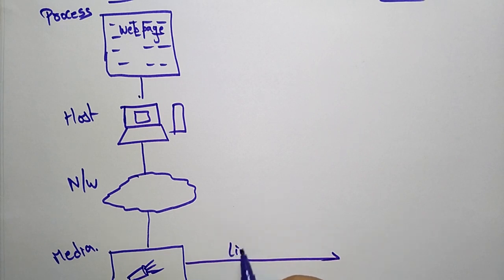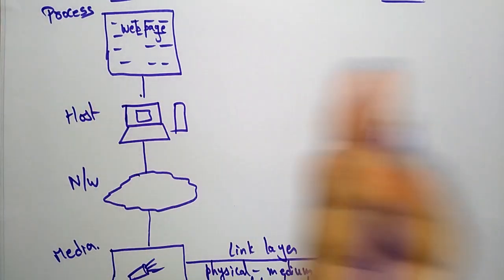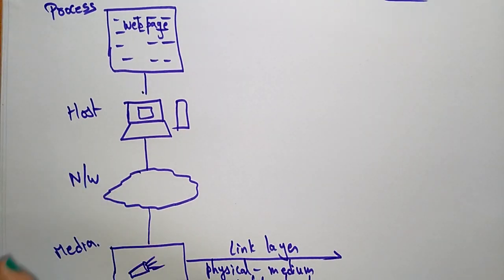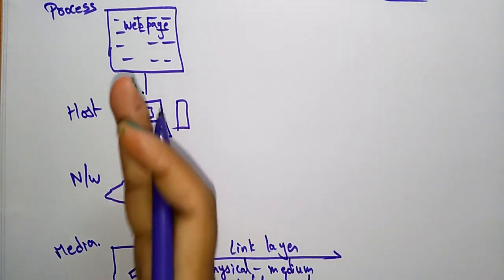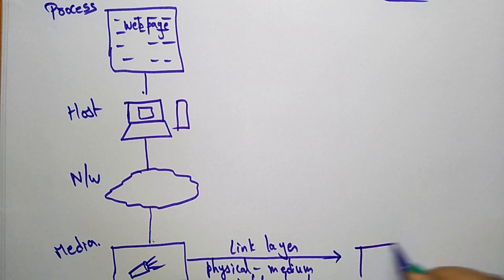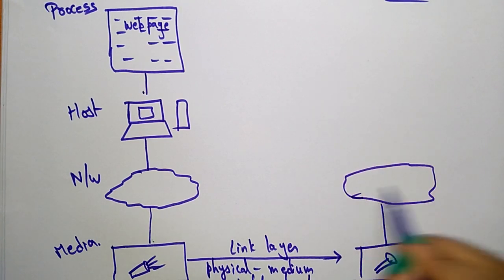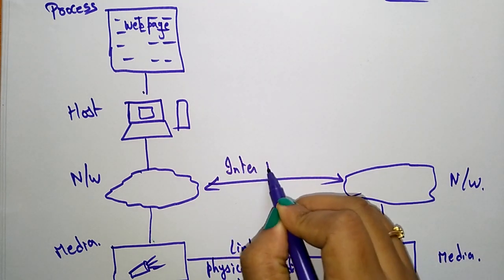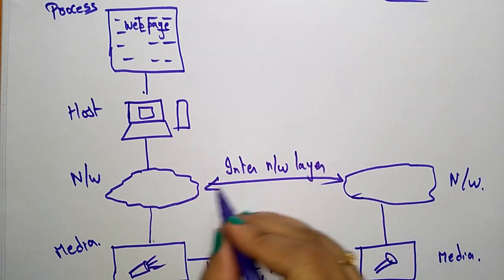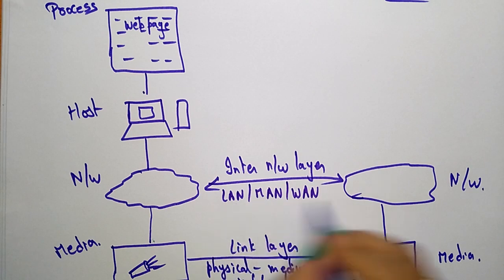With the help of the media, that is the link layer, the physical medium is independent. The client side and the server side may use different physical mediums — suppose one side uses some cable and the other side uses wireless. The medium is different from one system to another, so it is independent. Communication between these two networks is called the inter-network layer. At this inter-network layer we use LAN, MAN, or WAN.